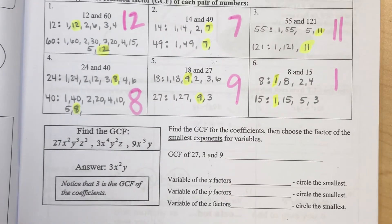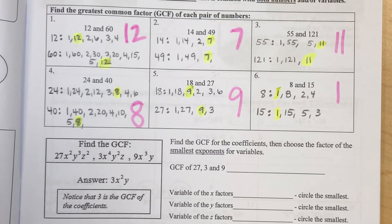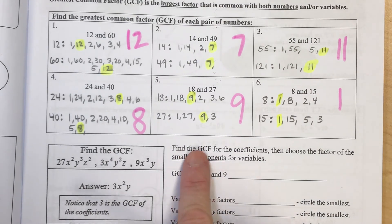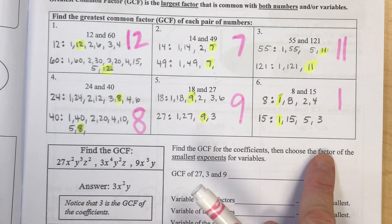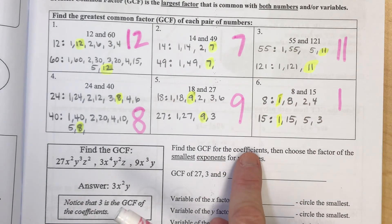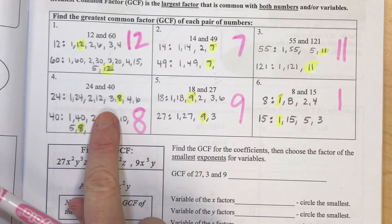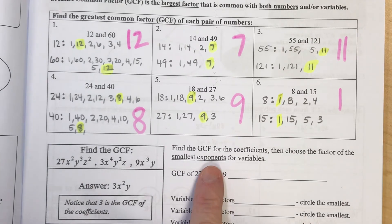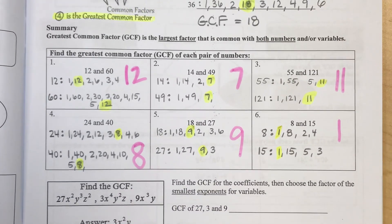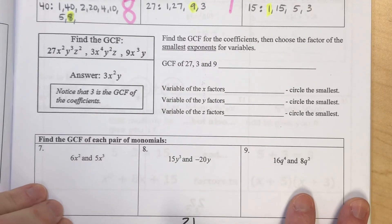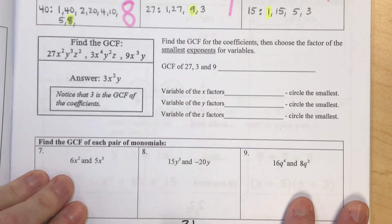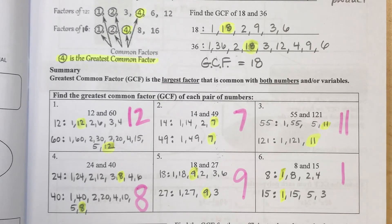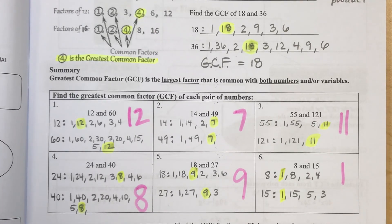Now, as we're going to get into letters, I just want to talk about how our greatest common factor will change. And so greatest common factor for coefficients will be the greatest common factor. But what you're going to find is, for letters, you're actually going to find the smallest exponent. And I want to show you that in my next video. And I'll do a few examples of how to find the variables next. But great job finding just the number terms for greatest common factor. And stay tuned for another video with variables.